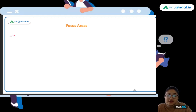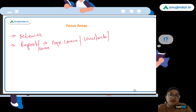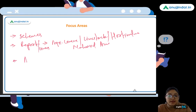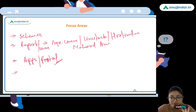The important focus areas to identify are: schemes — the most questions come from here; reports and censuses — including the Agriculture Census, ISFR, and National Livestock Census; horticulture data; the NABARD Annual Report; and government apps and portals launched in the area of agriculture and rural development. One question per session tends to come from current affairs in these specific areas.